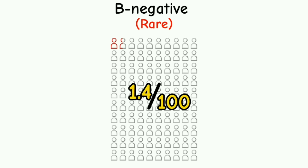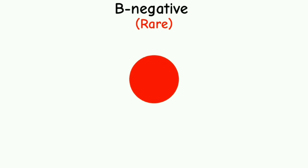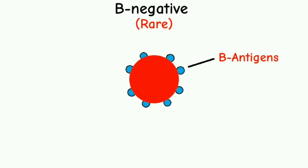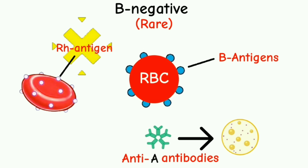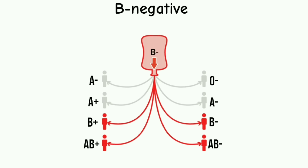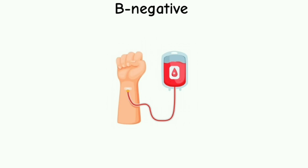B negative is one of the rarest blood types with only 1.4% of the U.S. population having this blood type. People with B negative blood type have B antigens on their red blood cells and anti-A antibodies in their plasma. They do not have the Rh antigen. B negative red blood cells can be given to both B and AB patients, but B negative patients can only receive blood from other B negative donors or from type O negative donors.